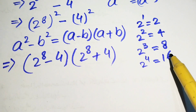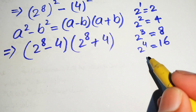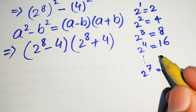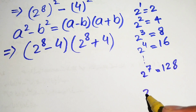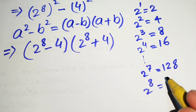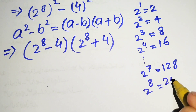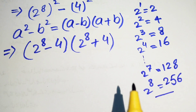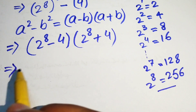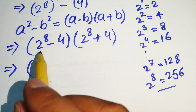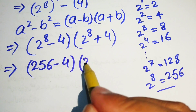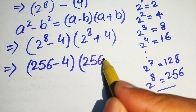Proceeding this way, 2 to the power of 7 equals 128, and to find 2 to the power of 8, we multiply 128 by 2 and easily get 256. This is our simple trick to find the value of any exponent of 2. Using this value, 2 to the power of 8 equals 256, so our expression becomes 256 minus 4, times 256 plus 4.